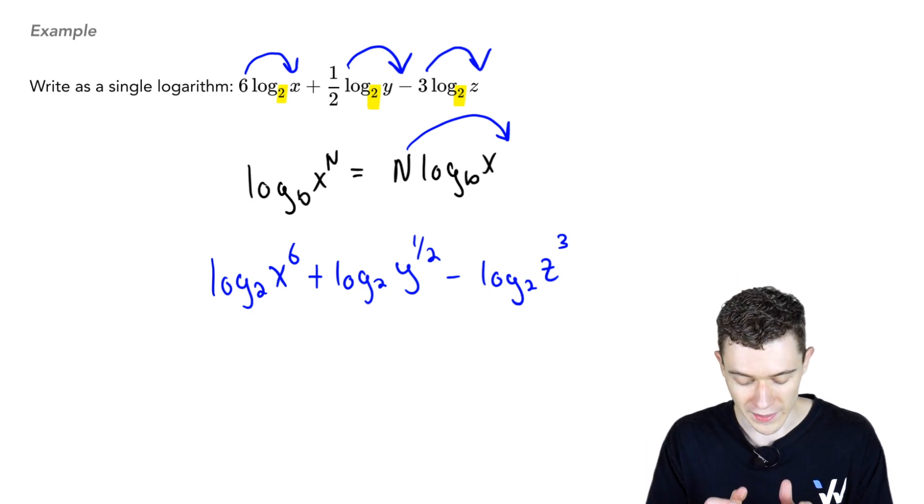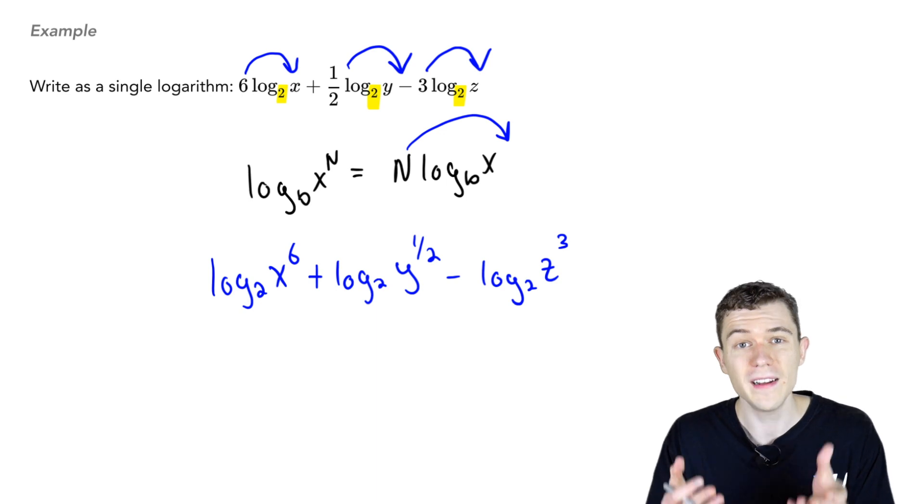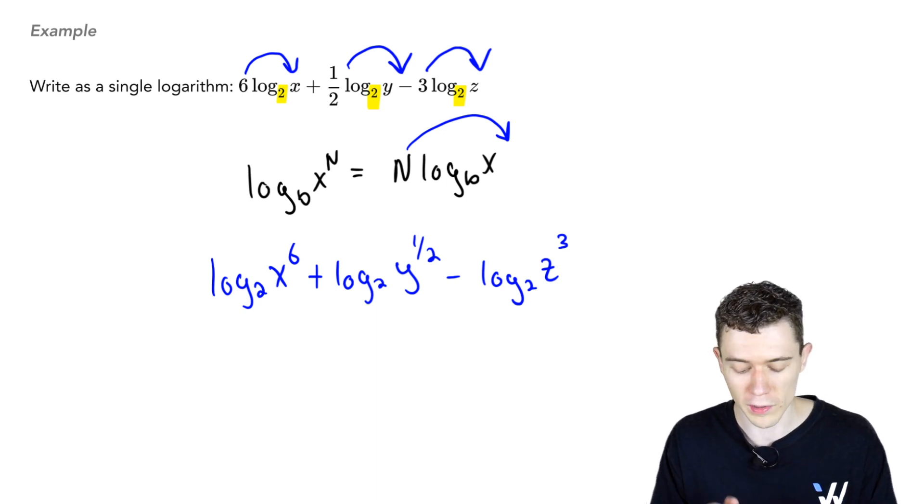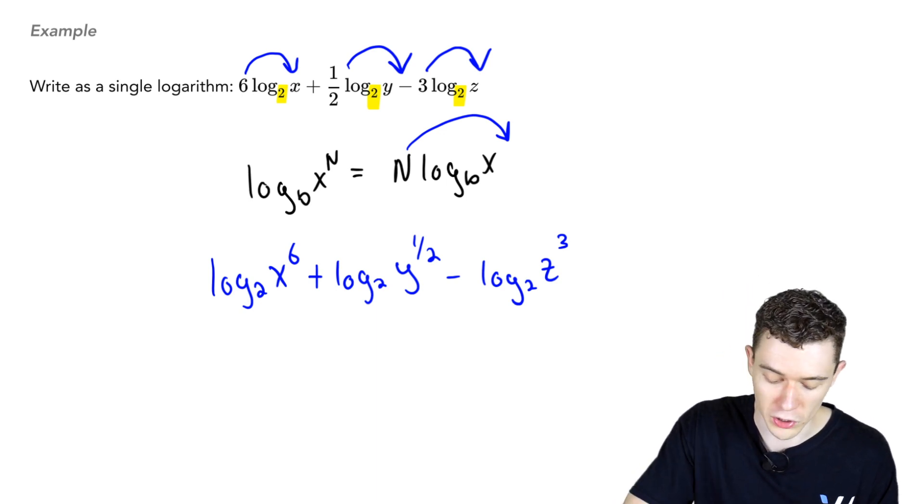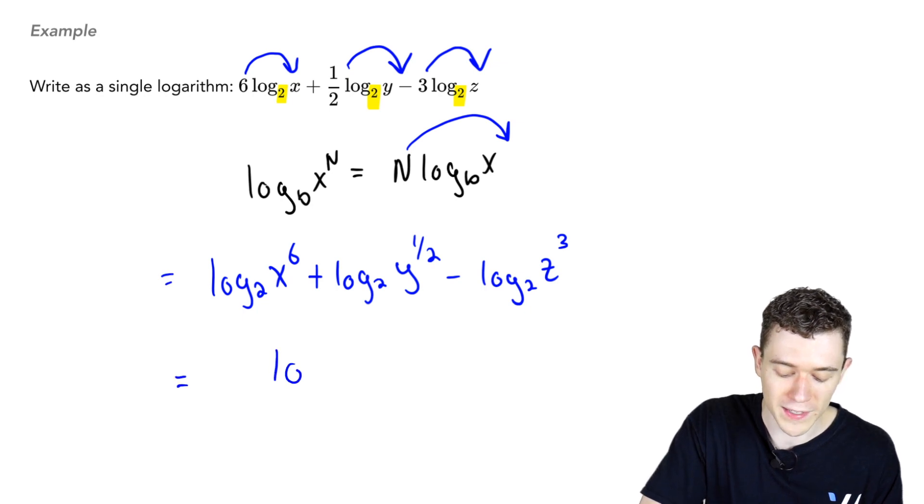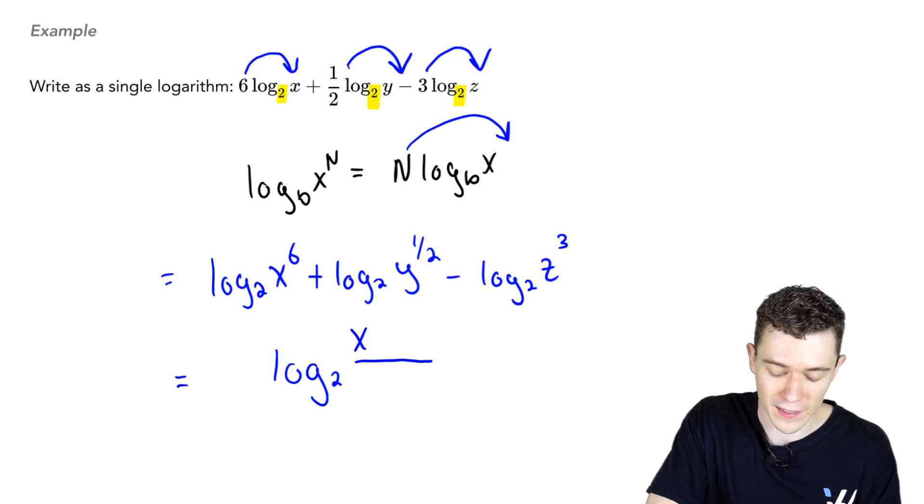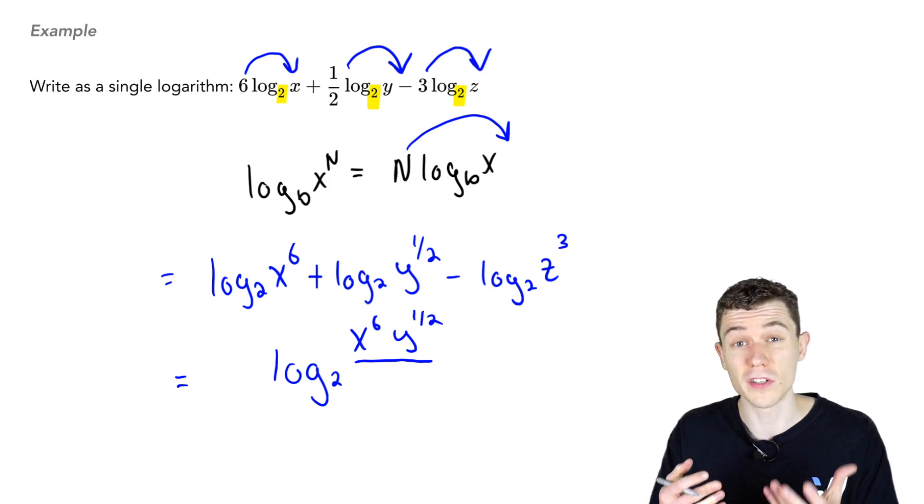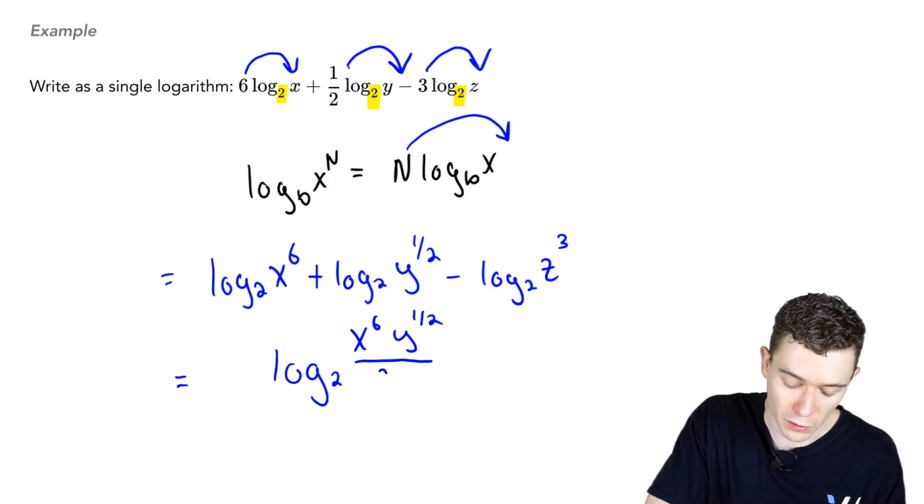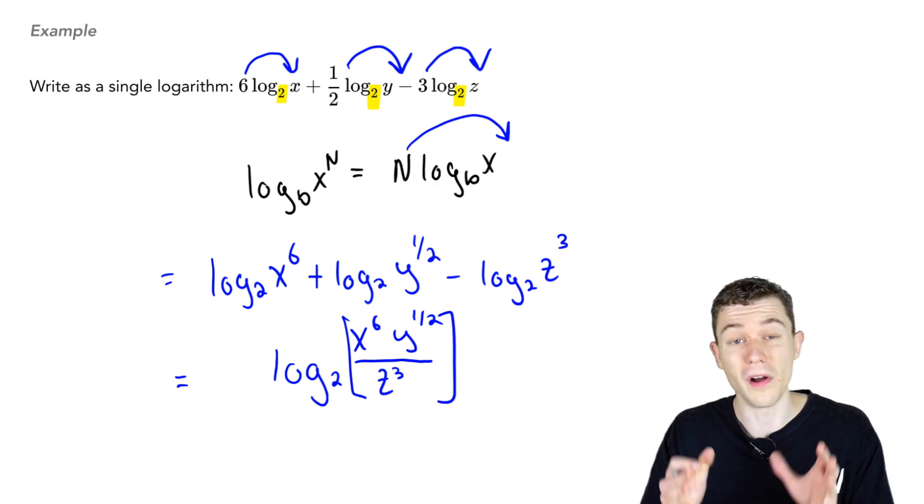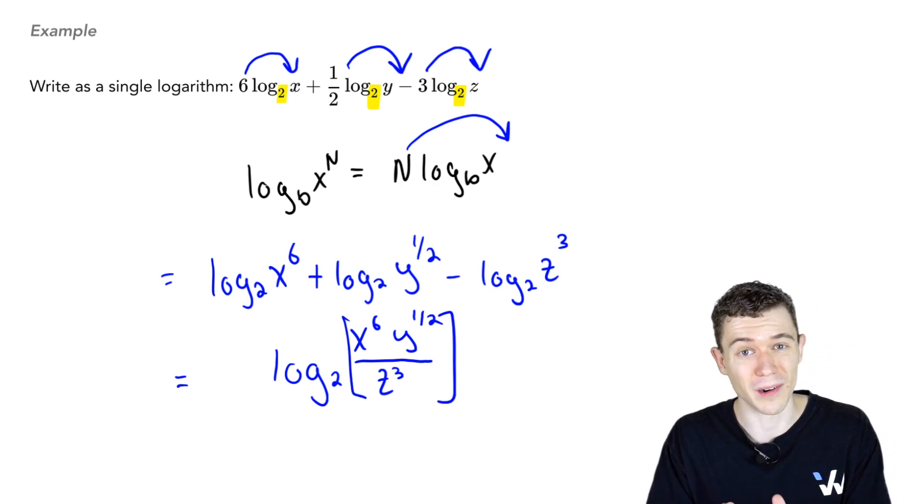We have to combine these. The logarithms which are added, they become a product. The logarithms subtracted, those become a quotient. What do I mean? Well, I mean we can write this as a very single logarithm. Whichever are added, namely the x to the 6th, and the y to the 1 half, they go on top. Whichever are subtracted, namely the z cubed, that goes on the bottom. And we've written this long expression as a single logarithm.